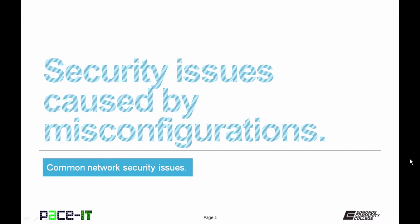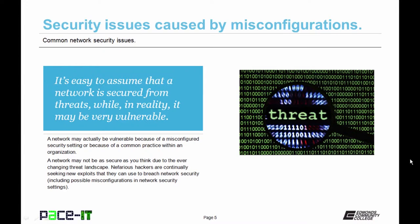I'm going to begin by talking about security issues caused by misconfigurations. It's easy to assume that a network is secured from threats, while in reality it may be very vulnerable — because of a misconfigured security setting or a common practice within an organization. A network may not be as secure as you think due to the ever-changing threat landscape. Nefarious hackers are continually seeking new exploits, including possible misconfigurations in network security settings. Settings may have been correct when set up, but due to the changing landscape, they may be considered a misconfiguration now.